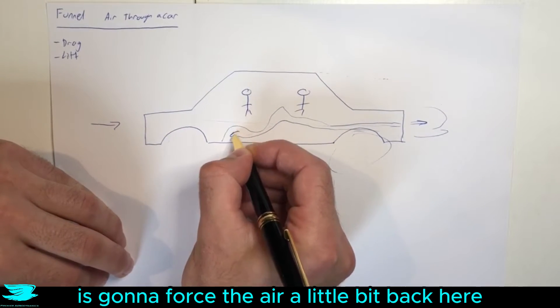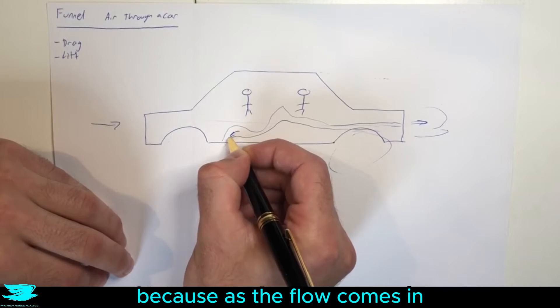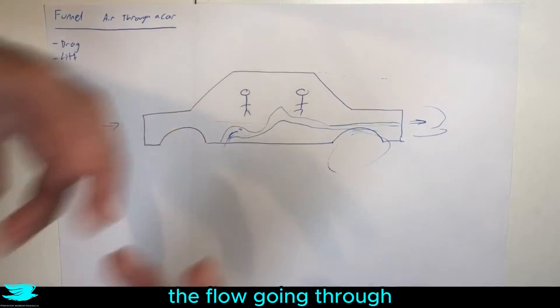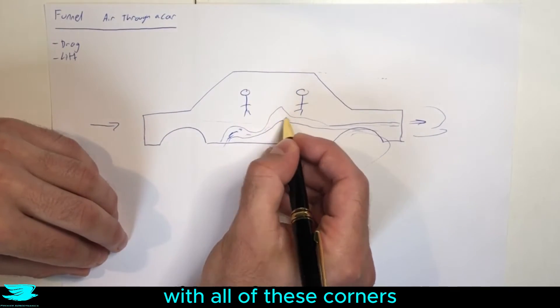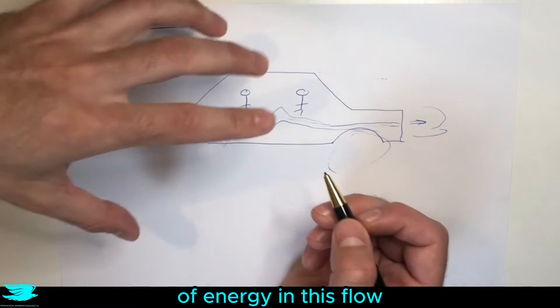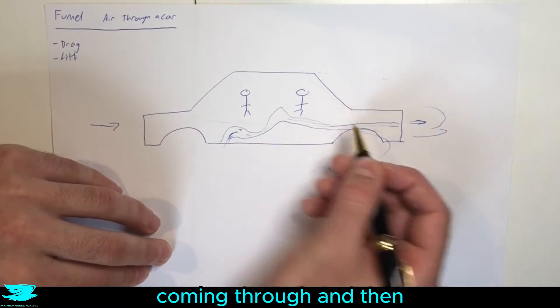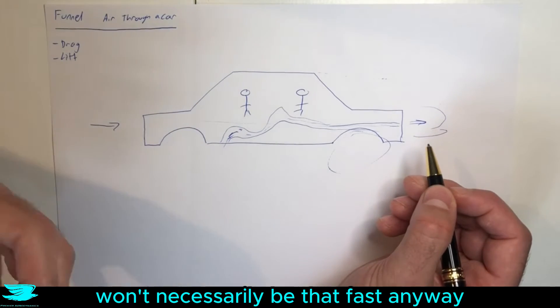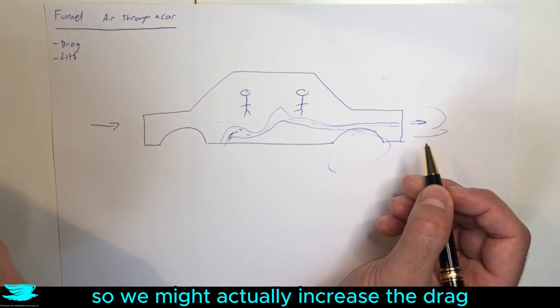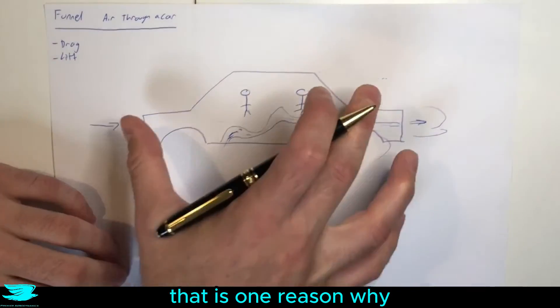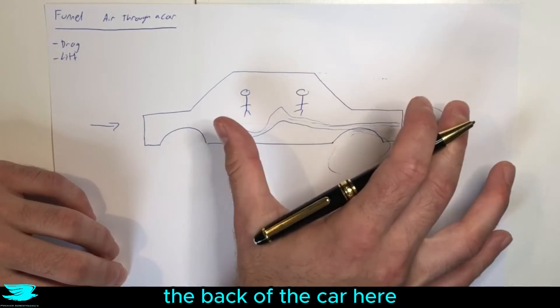This corner here is going to force the air a little bit back here because as the flow comes in it's going to hit this corner and there's going to be high pressure here kind of stopping the flow going through. The same thing happens with all of these corners around here. So you actually lose a lot of energy in this flow coming through and then the resulting flow coming out of the back here won't necessarily be that fast anyway. So we might actually increase the drag by doing it this way. That is one reason why we don't funnel air through the back of the car here.